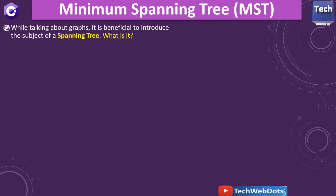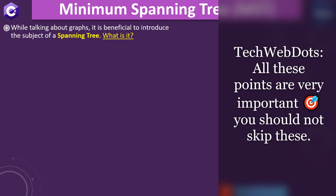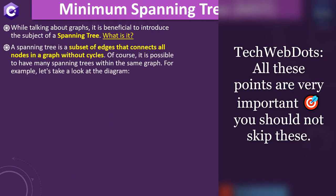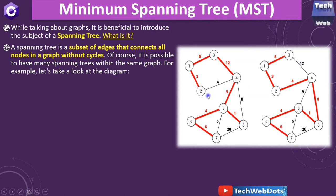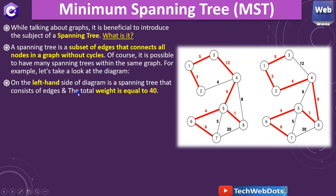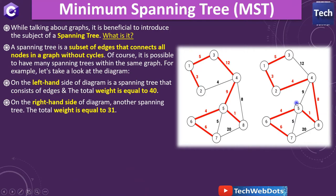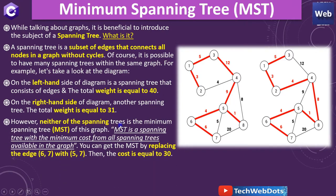So why is minimum spanning tree important? While talking about graphs, it is beneficial to introduce the subject of the spanning tree. A spanning tree is a subset of edges that connects all the nodes in a graph without a cycle. It is completely possible to have many spanning trees with the same graph. For example, on the left-hand side the spanning tree has a total weight of 40, and on the right-hand side another spanning tree has a total weight of 31.